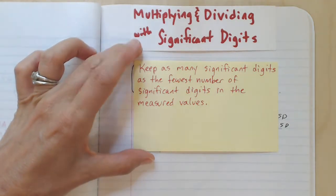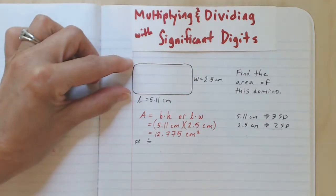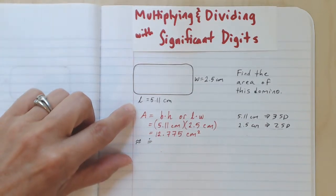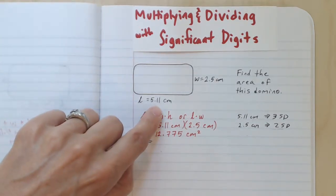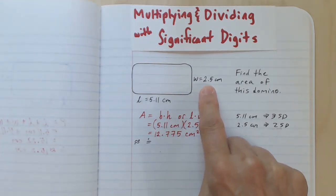So again, looking at the domino, suppose we're asked to find the area of this domino, really the area of its footprint. We've got the same measured values that we're working with, 5.11 centimeters, which has three significant digits, and the width of 2.5 centimeters that has two significant digits.